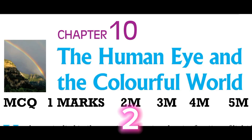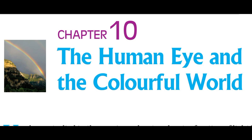Coming to the tenth chapter, The Human Eye and the Colourful World. Two two-mark questions will be asked based on differences between myopia and hypermetropia, or related to the eye. Some basic questions include why the sun looks red at sunrise and sunset, and the twinkling of stars. Focus on myopia and hypermetropia diagrams — how rays bend, how the condition is corrected, and by which lens. They will not ask more than three marks from this chapter.